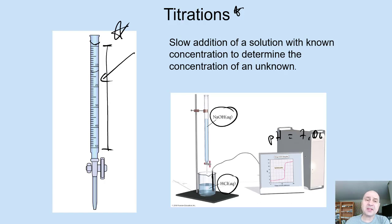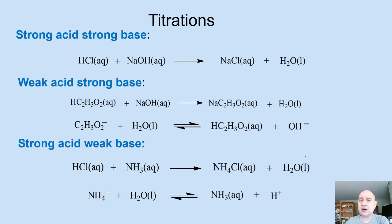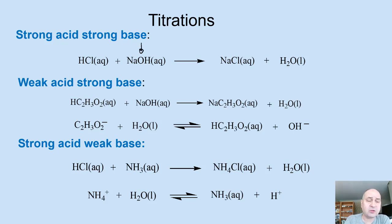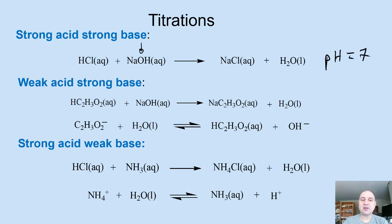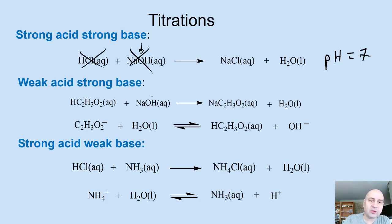For acids and bases, we have to be careful — there are different scenarios. For a strong acid/strong base reaction, it's not a problem. If you're adding a strong base of known concentration to a strong acid, when the reaction is done, the pH is going to be equal to 7, because at that point hydroxide and hydronium concentrations are equal, and all you have is sodium chloride, which is a neutral aqueous salt.